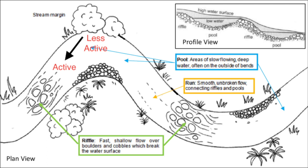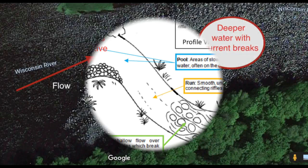They tend to hang out in the pools, and when they are ready to feed they move up river just downstream from a riffle and often actively feed in the current just below the riffle where there's a little bit deeper water and a lot of current breaks and eddies.